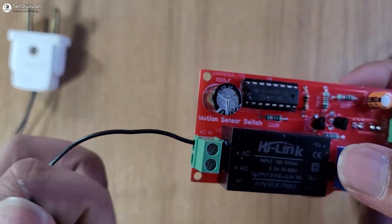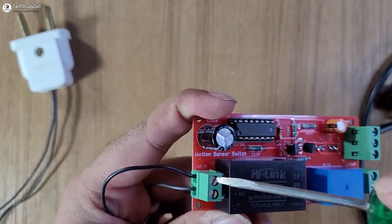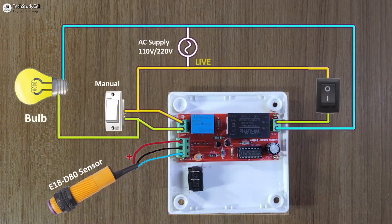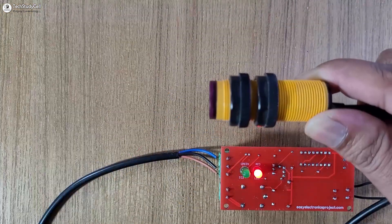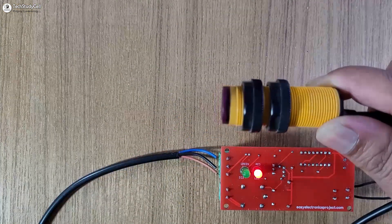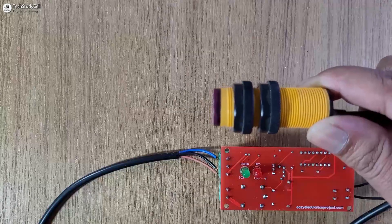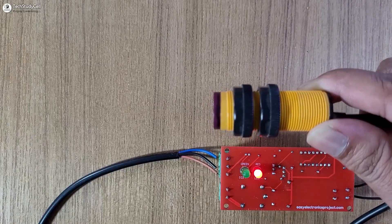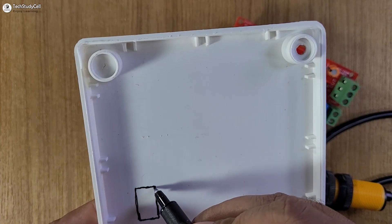After soldering, let me quickly test the circuit. Now let me connect the sensor and the supply with the PCB as per the circuit. It is working — as I move my hand in front of the sensor, the relay is changing state.